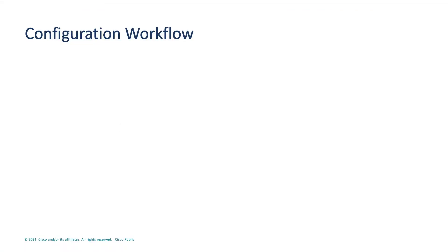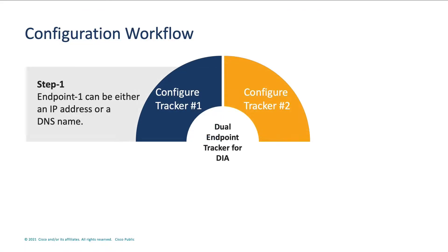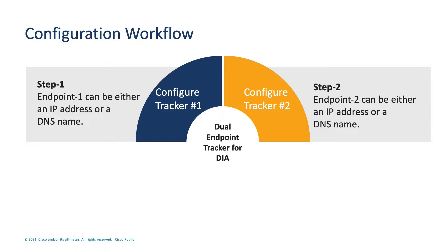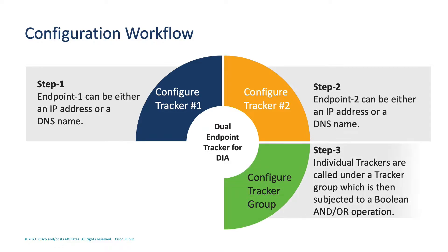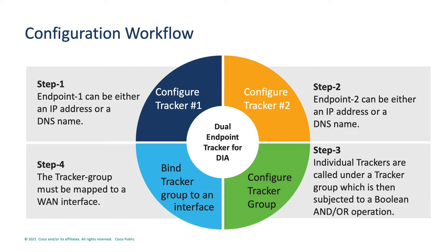Let's have a glance at the configuration workflow. In step 1 and step 2, individual endpoints need to be configured, which are then called under respective trackers. These endpoints can either be an IP address or a DNS name. In step 3, the trackers created in the above steps are mapped under a tracker group, which is then subjected to a boolean OR or AND operation. Finally, in step 4, the tracker group has to be mapped to a WAN interface, prior to which DIA NAT must already be configured on that interface.